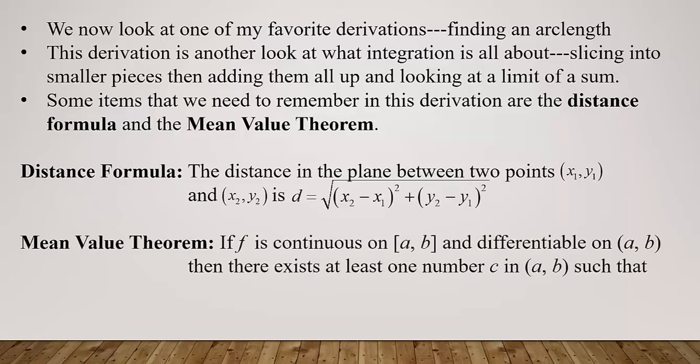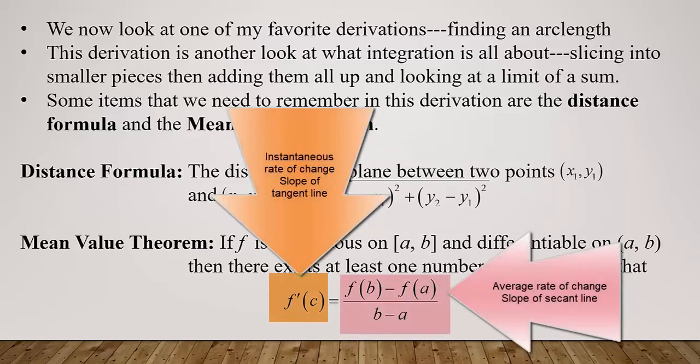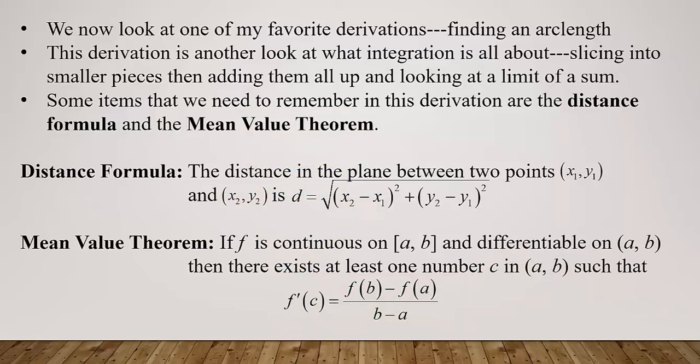The mean value theorem from Calculus 1 says: if f is a function that is continuous on the closed interval [a, b] and differentiable on the open interval (a, b), then there must exist at least one number c in (a, b) such that f′(c) = [f(b) − f(a)] / (b − a). This is where an instantaneous rate of change equals the average rate of change — the slope of a tangent line equals the slope of a secant line.